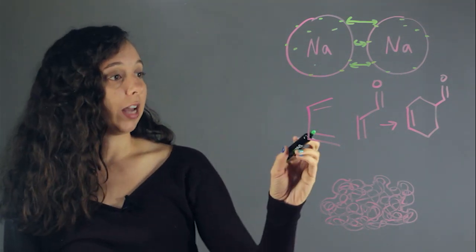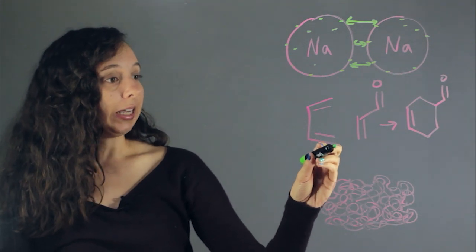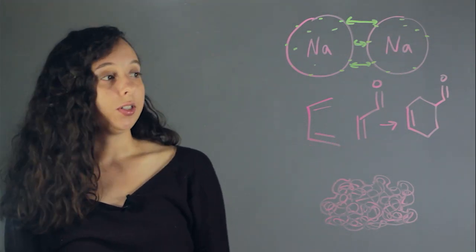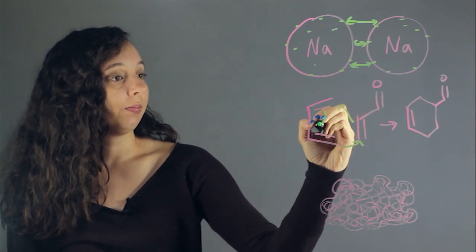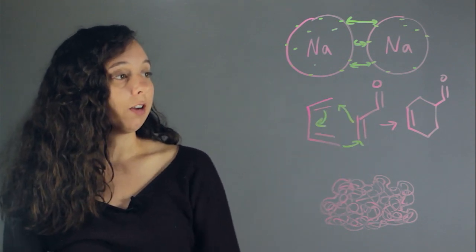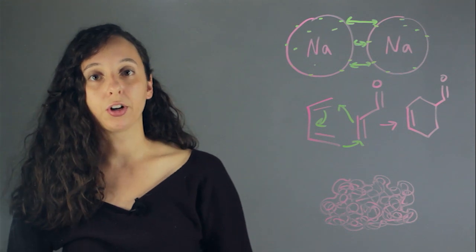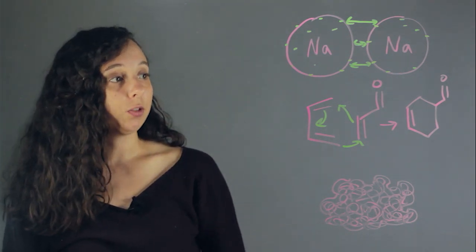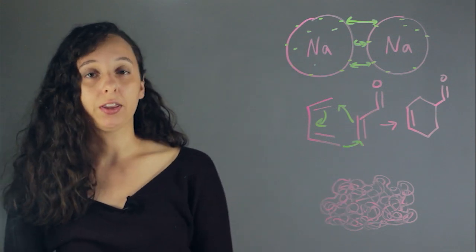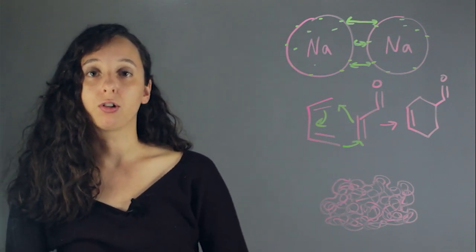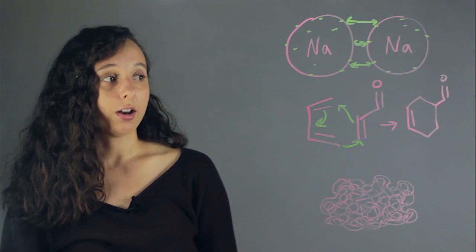And so another way that theoretical chemistry is important is by looking at organic reactions. So this is the typical Diels-Alder reaction. But theoretical chemistry can really help us learn what type of substituents will help to make the reaction faster, what will make the reaction have certain stereochemical results, and on and on.